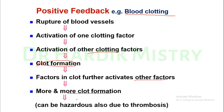However, the clotting mechanism can be hazardous due to thrombosis. If this clotting mechanism does not work properly, or if it produces blood clots inside healthy blood vessels, it becomes dangerous. This is another example of the positive feedback loop.